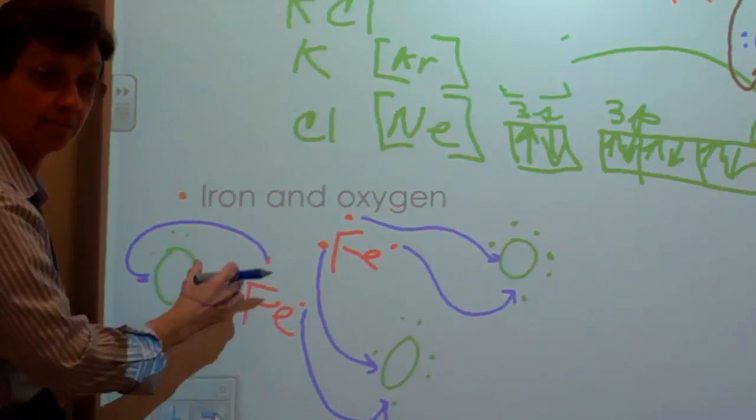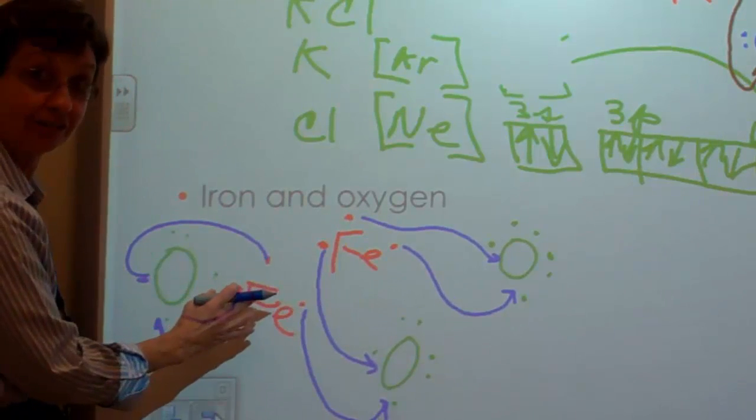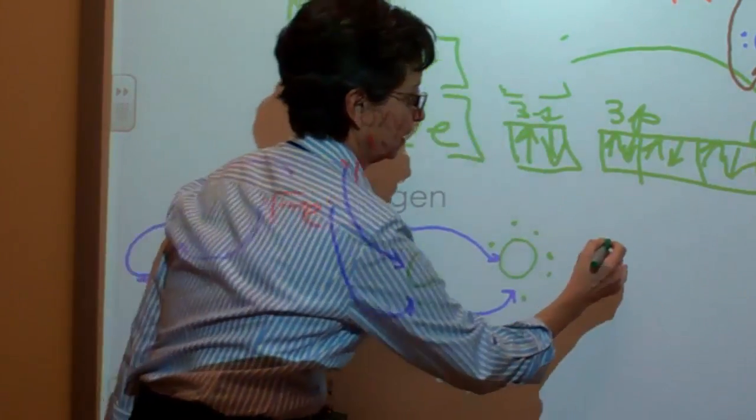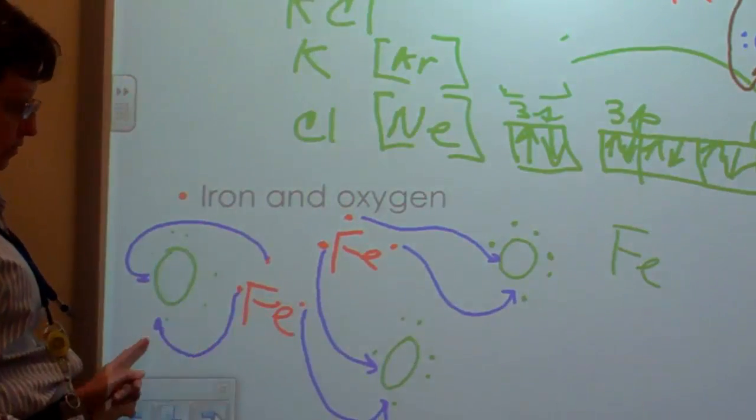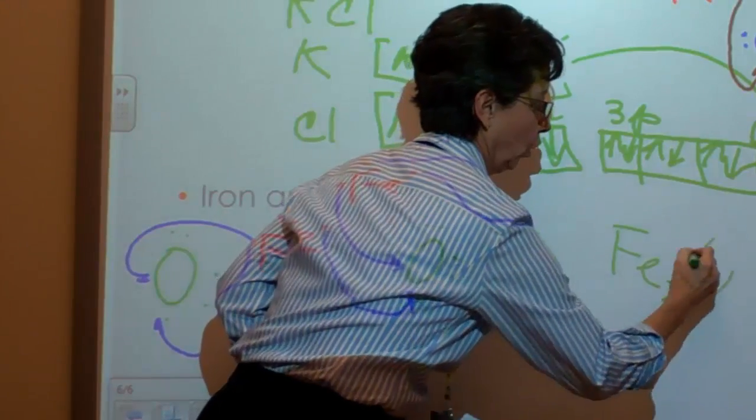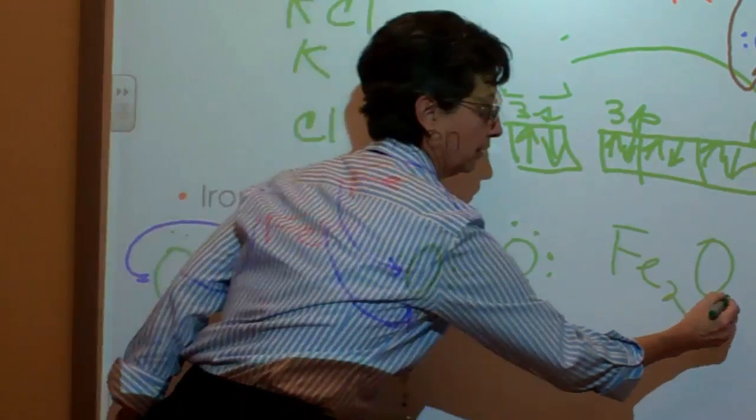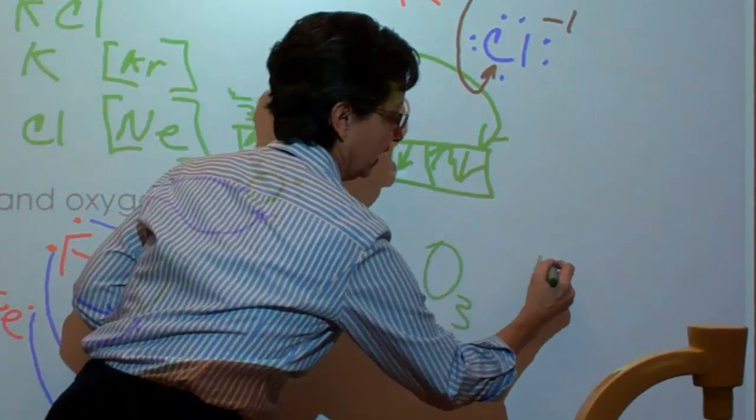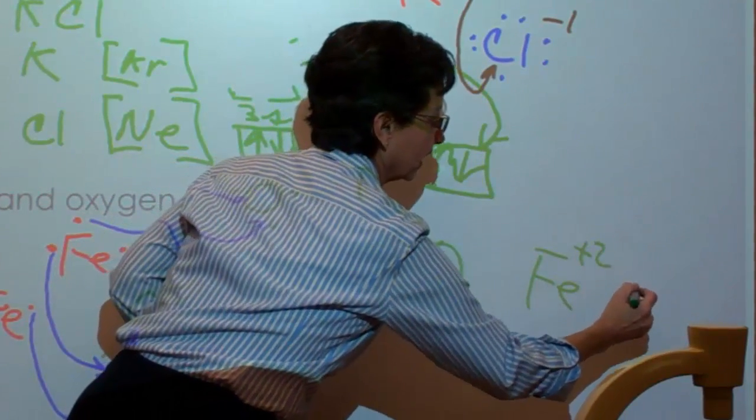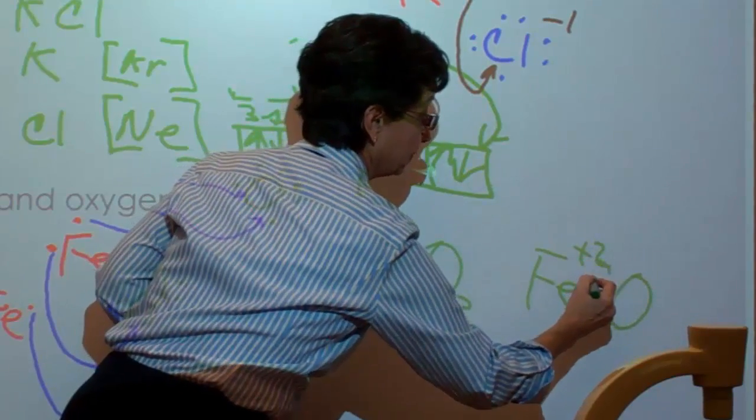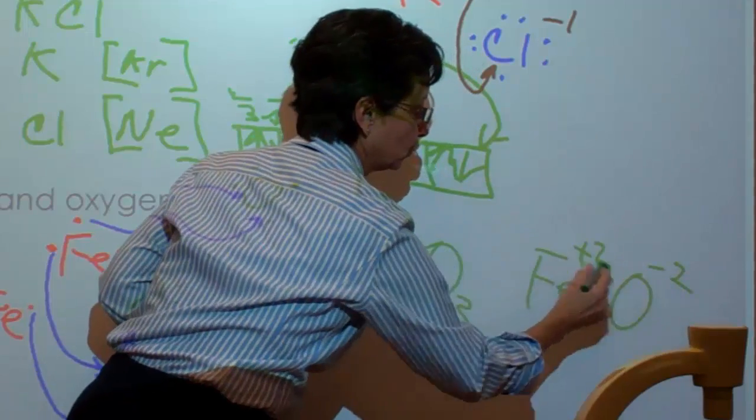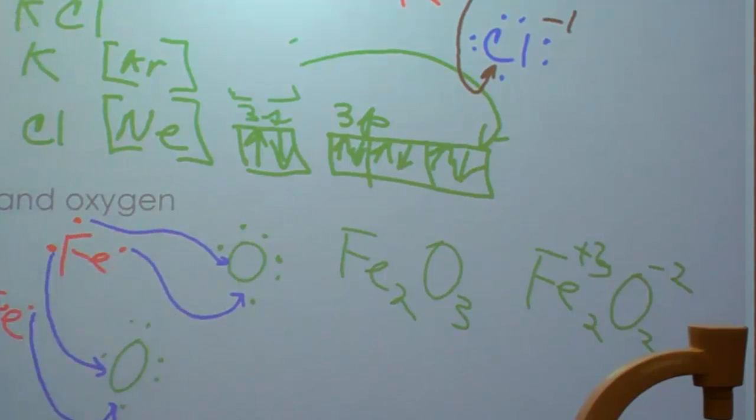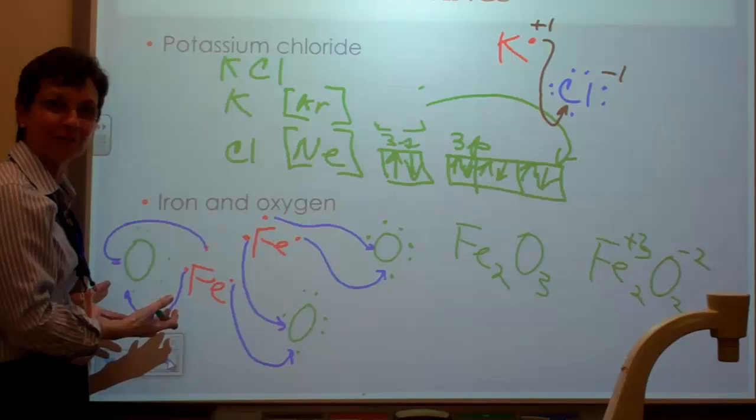We have 2 iron atoms, 2, 3 oxygen atoms, and we would write Fe2O3. Which amounts to the same thing you did back in the day when you wrote Fe plus 3 and O negative 2. And, you crisscrossed, and this became a 3 and that became a 2. Same idea, just now you know where this came from and why it happens.